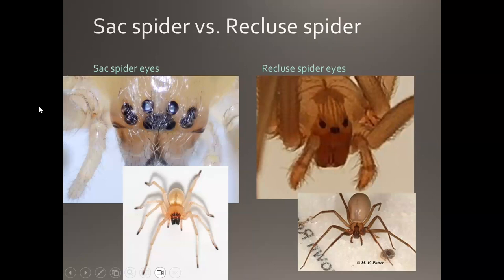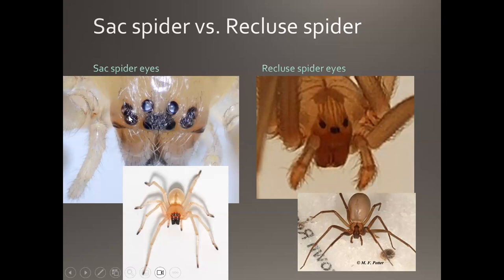Here's a sac spider on the left and a recluse spider on the right. Looking at the bottom pictures you can see why people confuse the two, especially those unfamiliar with spider identification. If someone is bitten by a sac spider and has a localized reaction, they may worry it's a recluse. You need a good hand lens or microscope to examine the eye pattern. The recluse has six eyes in three pairs on the front edge of the cephalothorax, while the sac spider has a pair on each side and a cluster of four at the center.